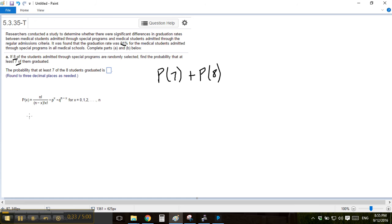So if you don't have technology, you're going to have to use this big ugly formula where x is going to be equal to 7 and n is going to be equal to 8, and then p is equal to the probability of graduation which is 0.91, and q is the complement of p, so it's 1 minus p, and that's 0.09.